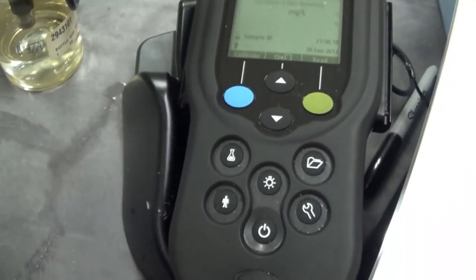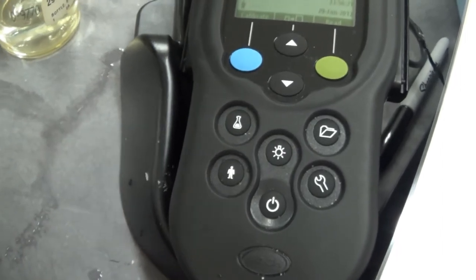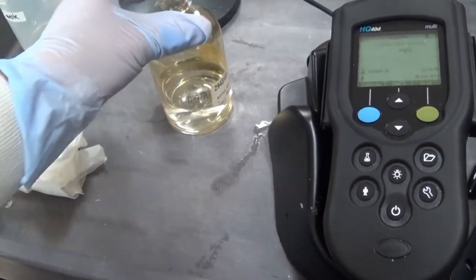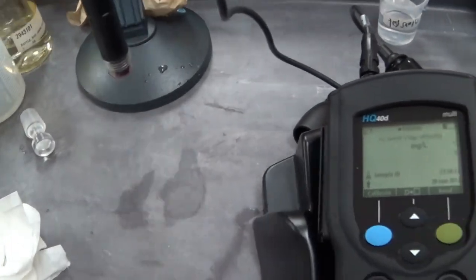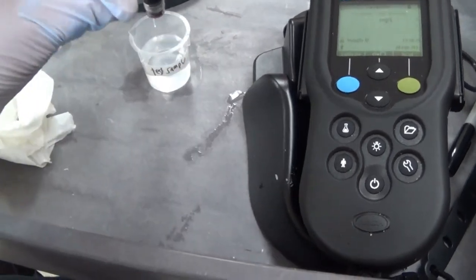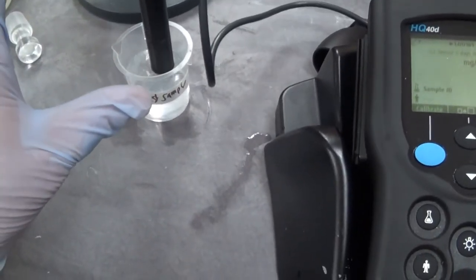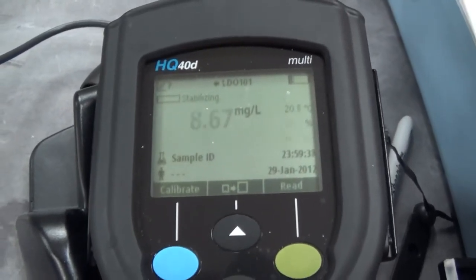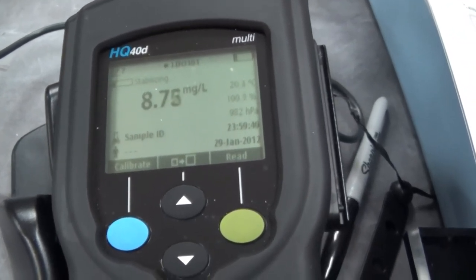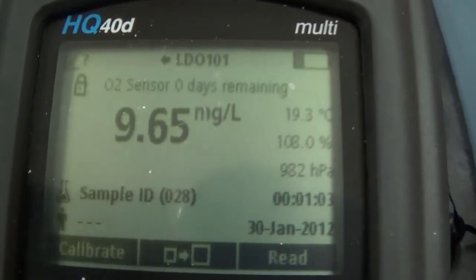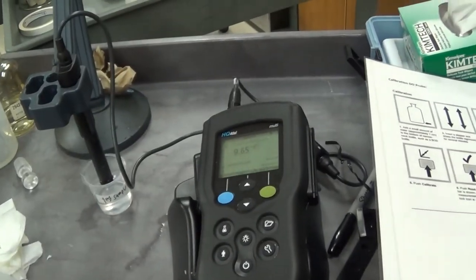Next, we are going to do our test sample. Obviously, our test sample is not in the proper container. But since this is a demonstration, we are just going to take a reading on our test sample. Of course, it has been exposed to air and all that, but it is just a demonstration. Let's see what our ground water is. It is still stabilizing. And there it is. That's our dissolved oxygen. And that completes our demonstration of our HQD meter.